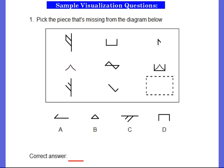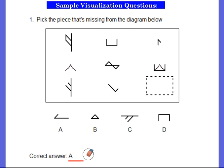The next category has to do with visualization. The question says: pick the piece that's missing from the diagram below. You choose A, B, C, or D to fill in the rectangle box above. If you need more time, pause the video. The answer is A. Did you get that right?